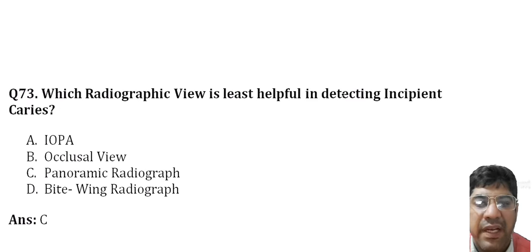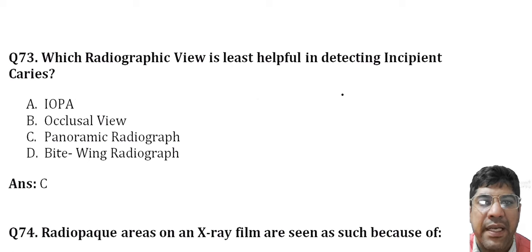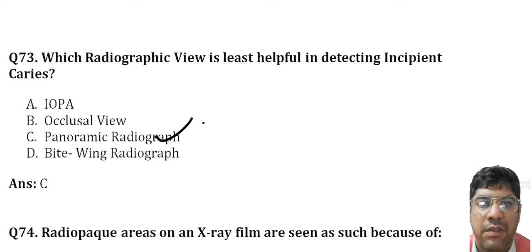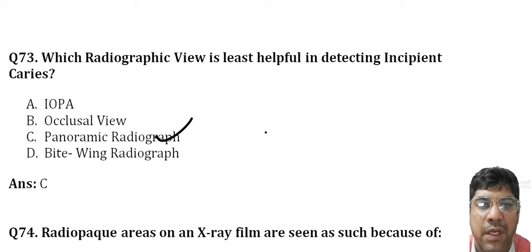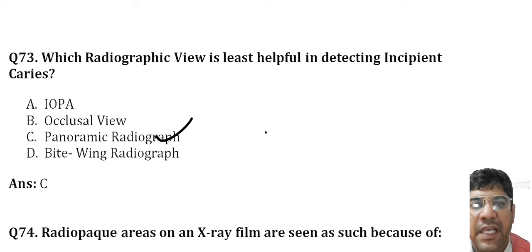Which radiograph is least helpful in detecting incipient caries? It's the panoramic radiograph. Panoramic radiographs are less effective in detecting small caries lesions or fine structures of the marginal periodontium or periapical disease, compared to IOPA, occlusal, and bite-wing radiographs, which are more suitable for caries detection.